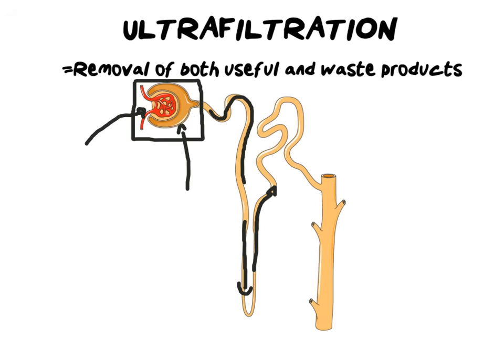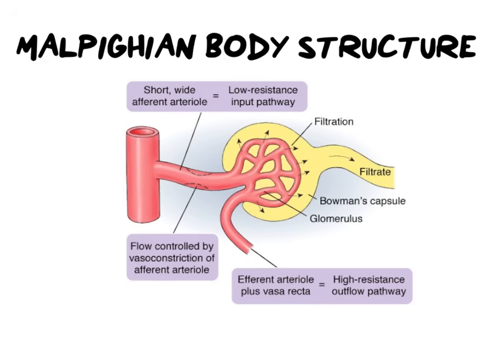To better understand ultrafiltration, we need to look at the structure of the Malpighian body and how it enables its function. We need to break it down into its two main components and look at exactly how these components allow ultrafiltration to occur and how we maintain this filtration constantly. The first major component is the glomerulus, which is made up of a network of blood capillaries that increase the surface area and allow a large amount of blood to pass through and be filtered.